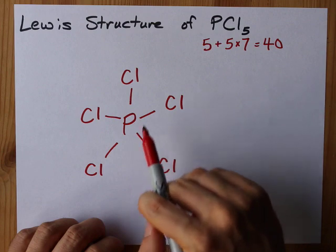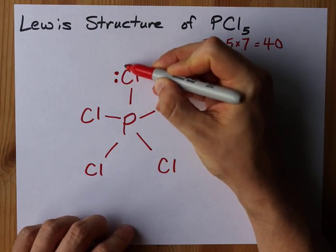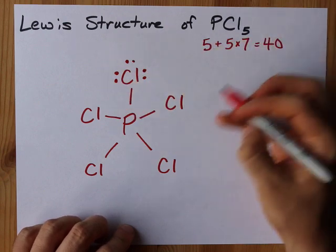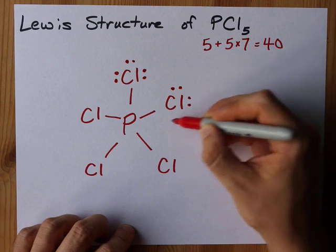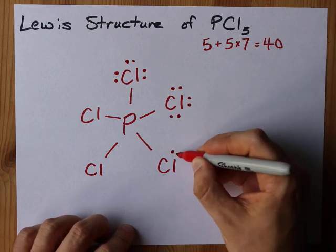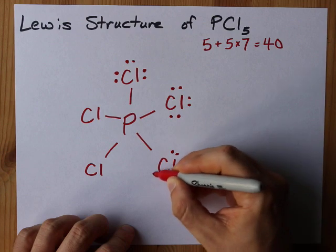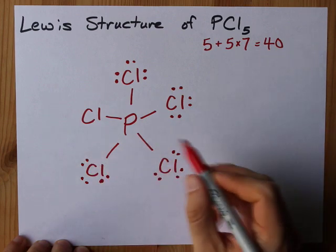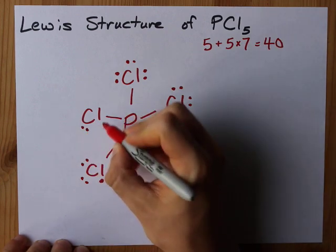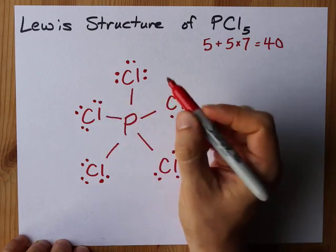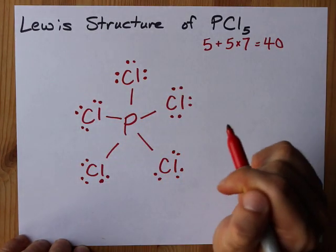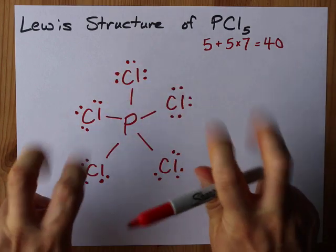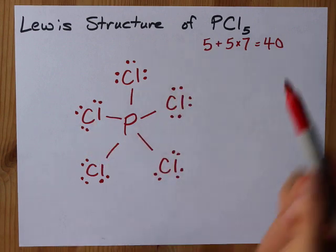Placing electrons on each chlorine atom: 2, 4, 6, 8, 10, 12, 14, 16. He now has eight electrons around him. 18, 20, 22. Happy. 24, 26, 28. Happy. 30, 32, 34. Happy. Oh, that worked out swimmingly. I have 40 electrons down and all of my chlorines are happy with their full octet of eight electrons around it.